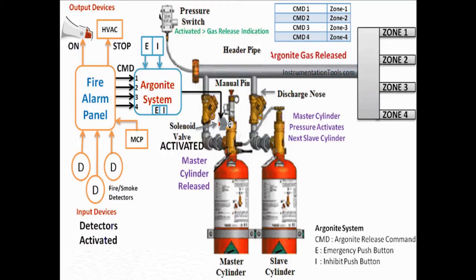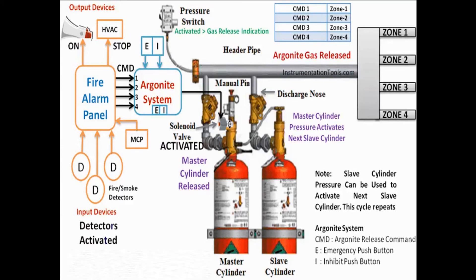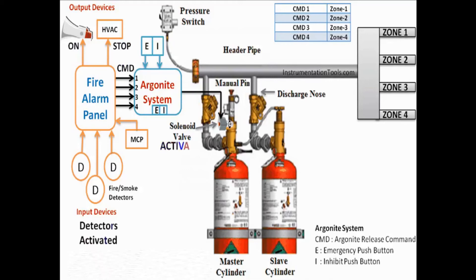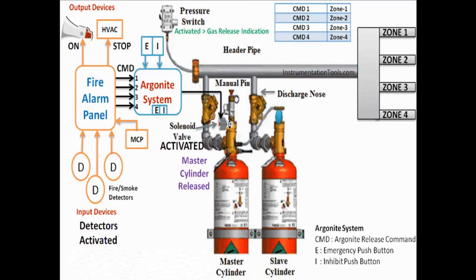Generally we use more than one master cylinder either to speed up the operation or to divide the cylinder quantity to specific zones. A manual valve or release cutter pin is provided on all master cylinders. In case of auto failure, this manual valve can be used to release the master cylinder, which then activates the remaining slave cylinders. Emergency push buttons are also installed near the argonite system or respective zones, and are provided on the argonite panel as shown in the animation.